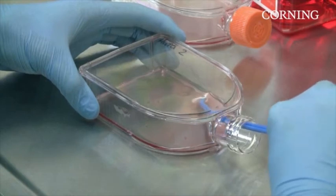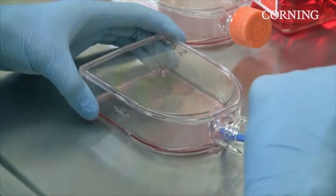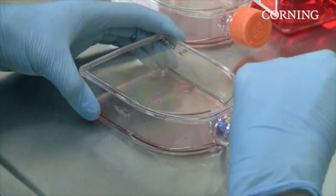The updated design of our widely used flask features rounded shoulders, an improvement that reduces the number of corners for cell scraping.